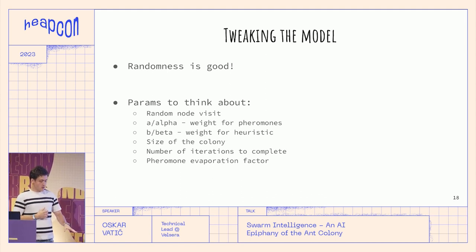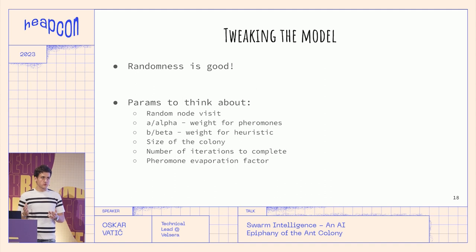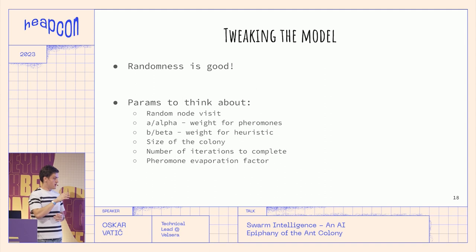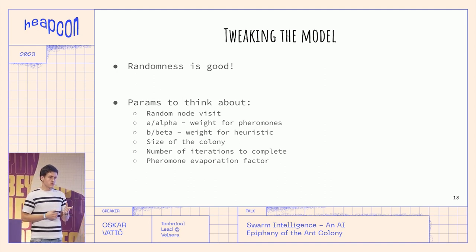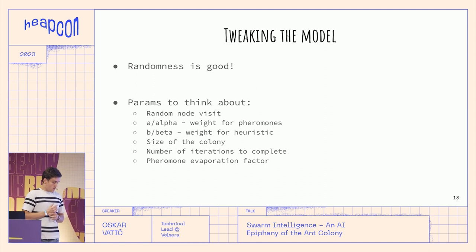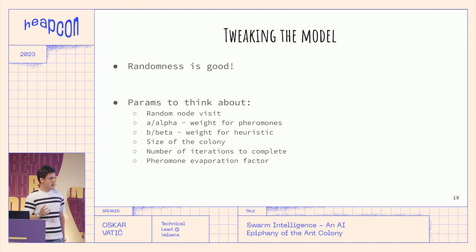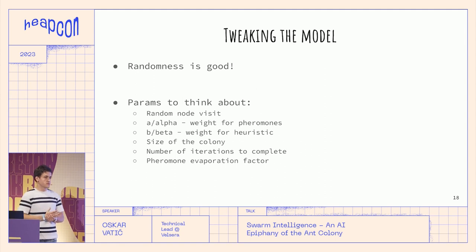Another parameter is size of the colony. Some production-grade systems would have colony sizes from 0.5x to 5x the number of nodes. You can have hundreds of thousands of agents and find great results, but that requires massive amounts of resources — and colony optimization, like any other optimization algorithm, is all about finding the best solution using the absolute least amount of resources. The number of iterations to complete is also a parameter to tweak if you decide to have a predefined number of iterations.